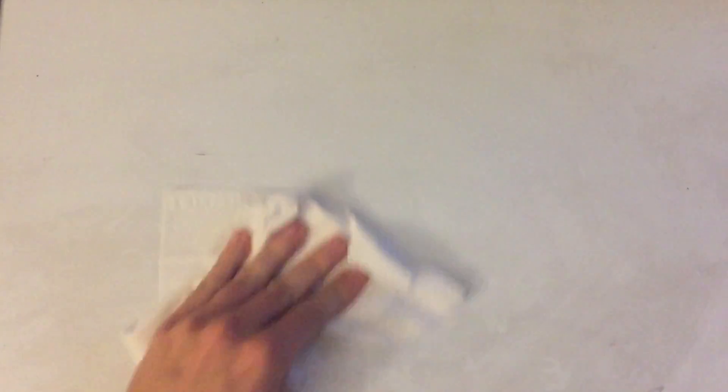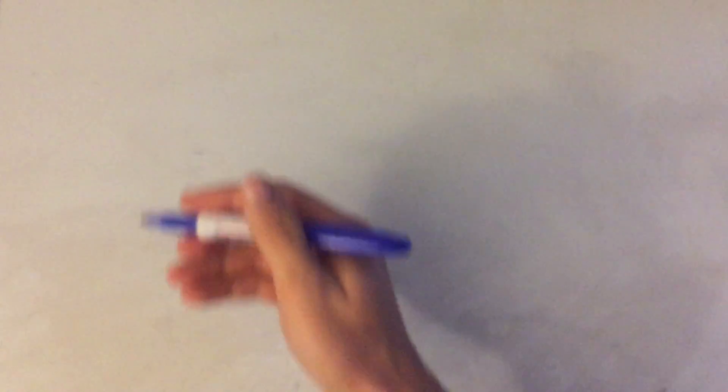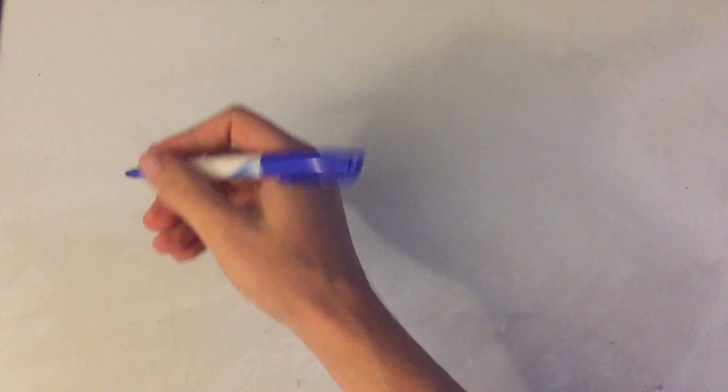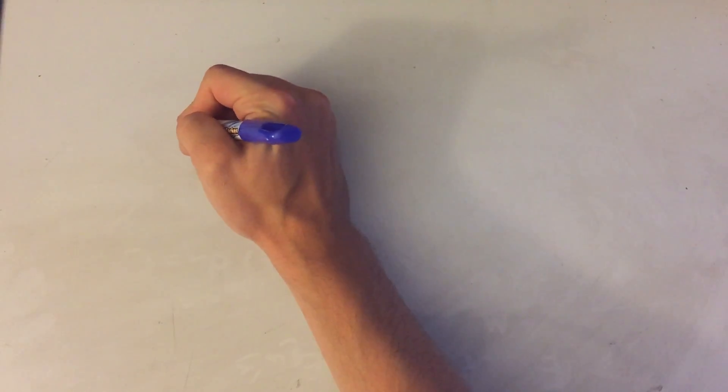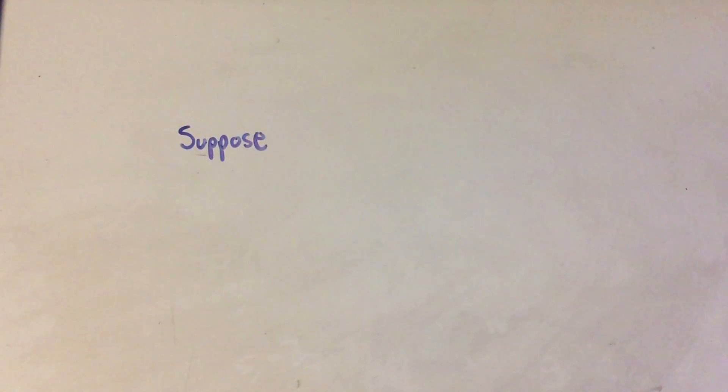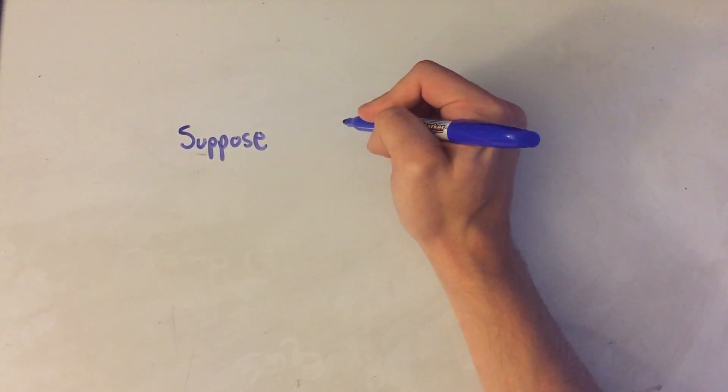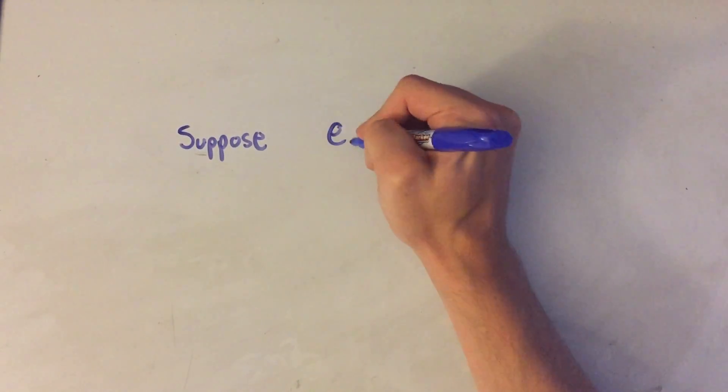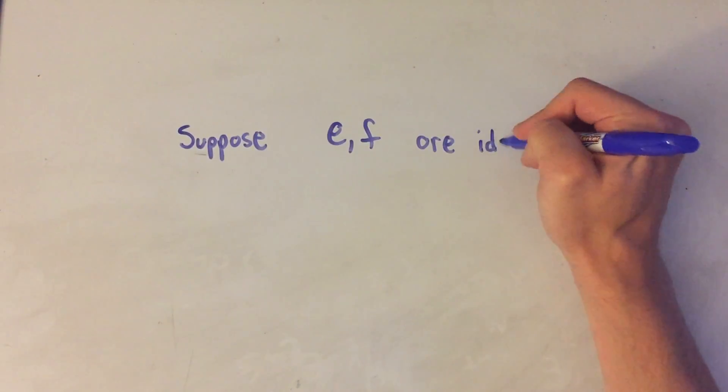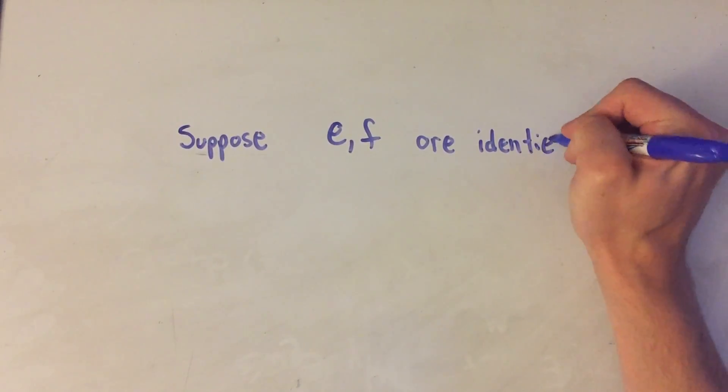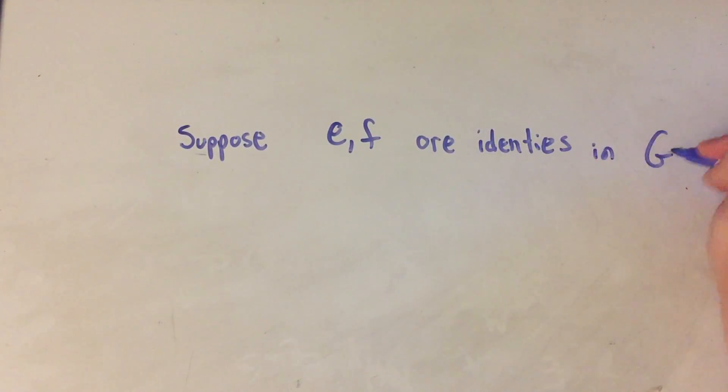So if you're watching this video you no doubt have some sort of idea of what a group is, and you know that groups have identity elements. So let's just suppose that there are two identity elements. Let's just suppose E and F are identities in our group G.